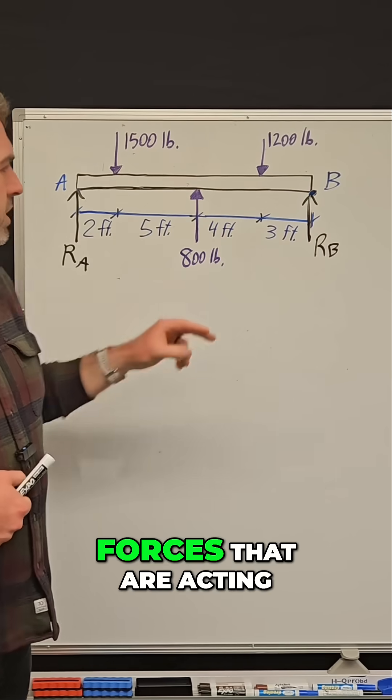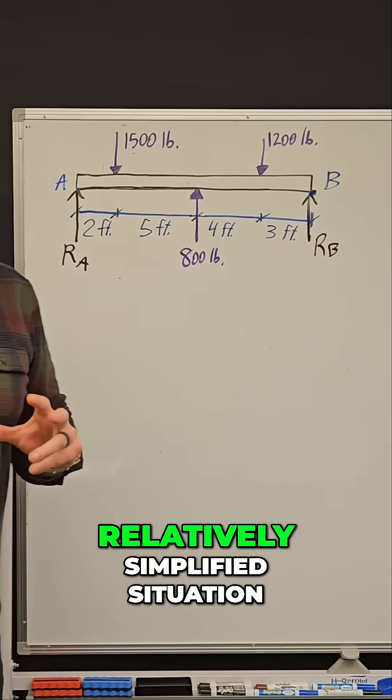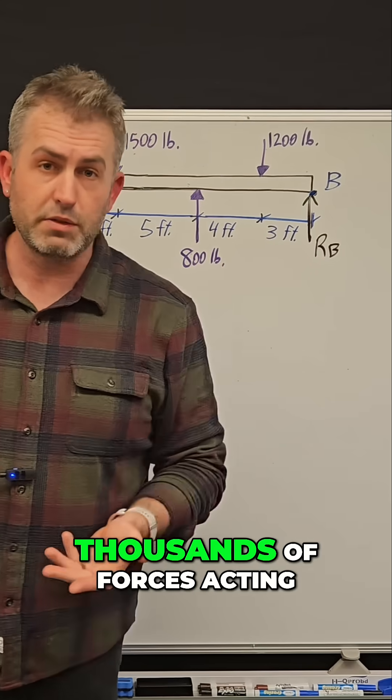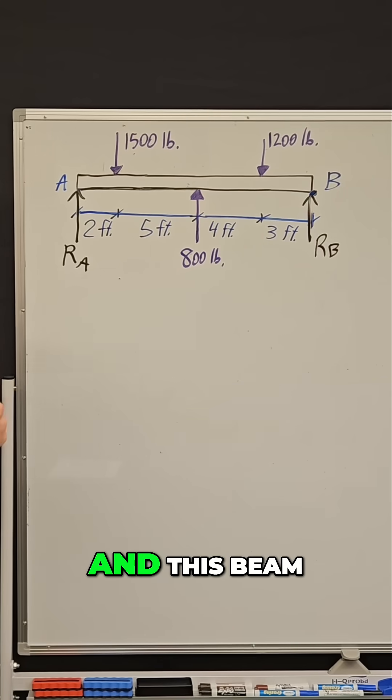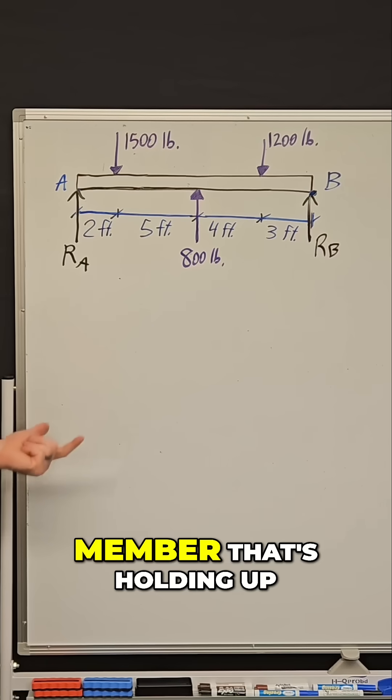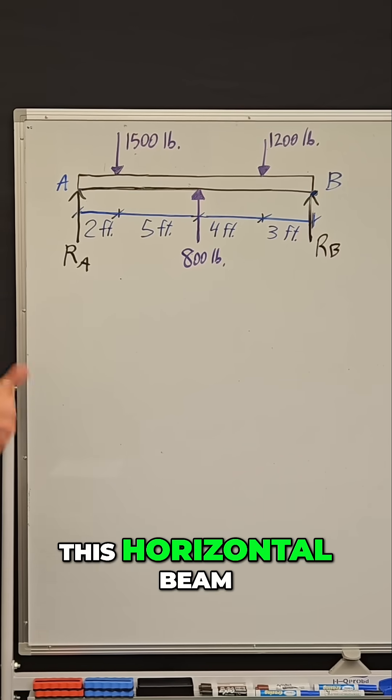We have three external forces acting on this beam, which is a relatively simplified situation. Typically, there may be hundreds, if not thousands of forces acting on this beam, and this beam is being supported by columns on both ends. A column is a vertical member that's holding up this horizontal beam.